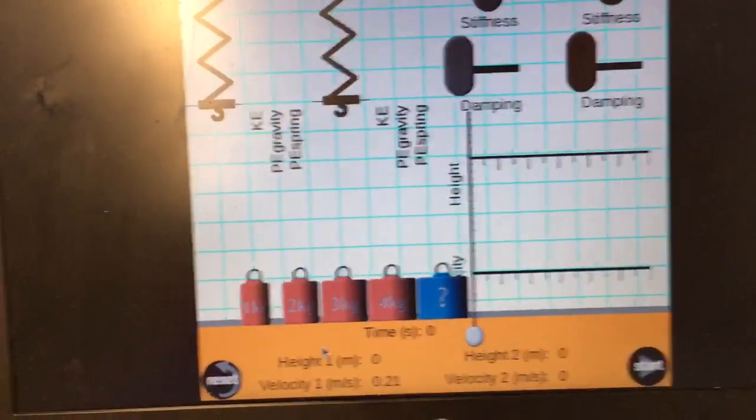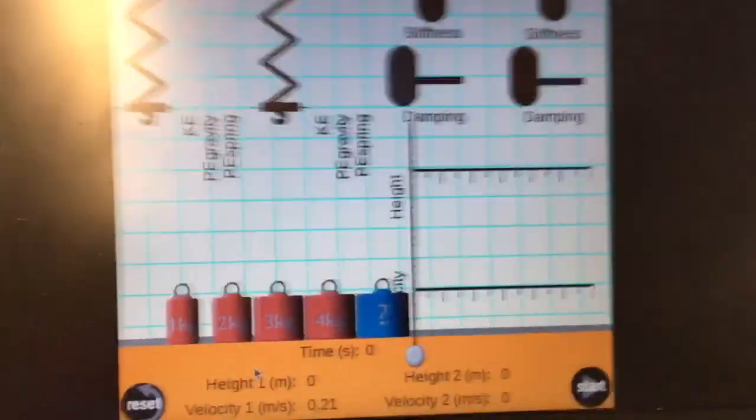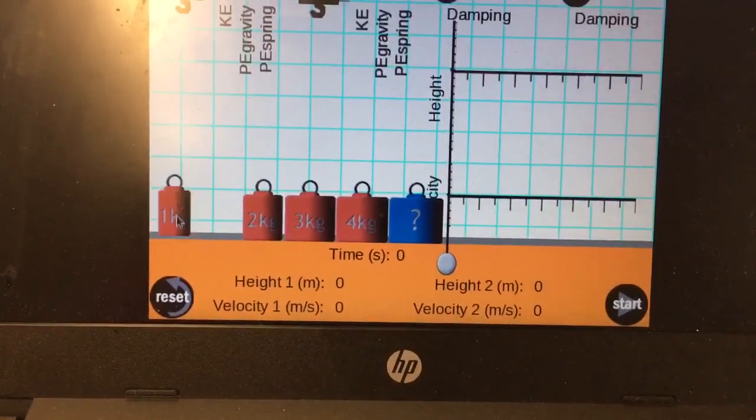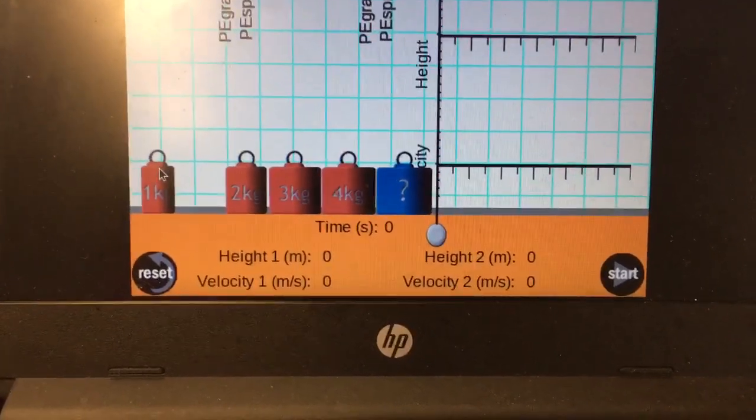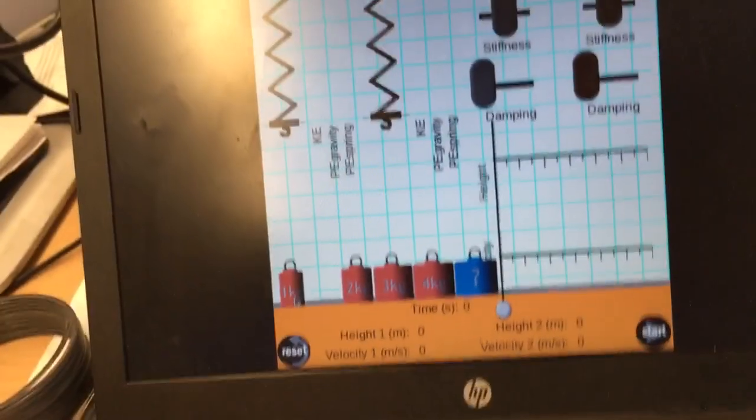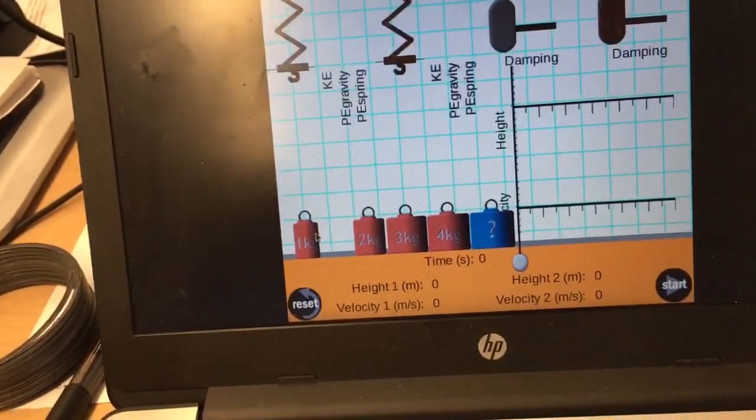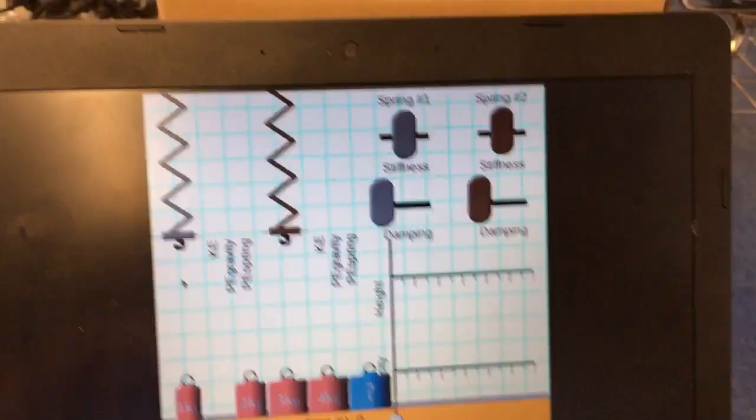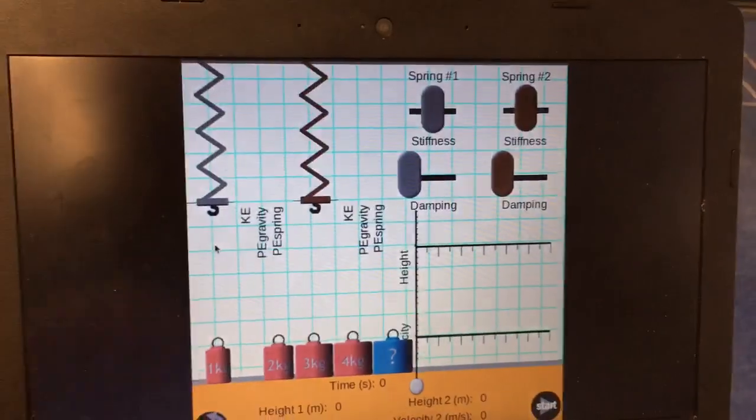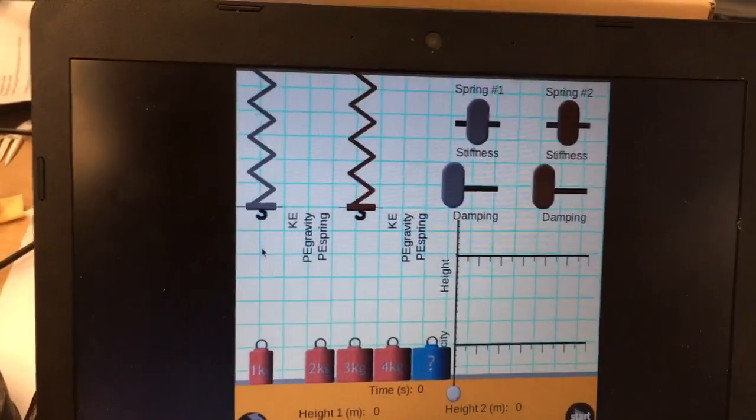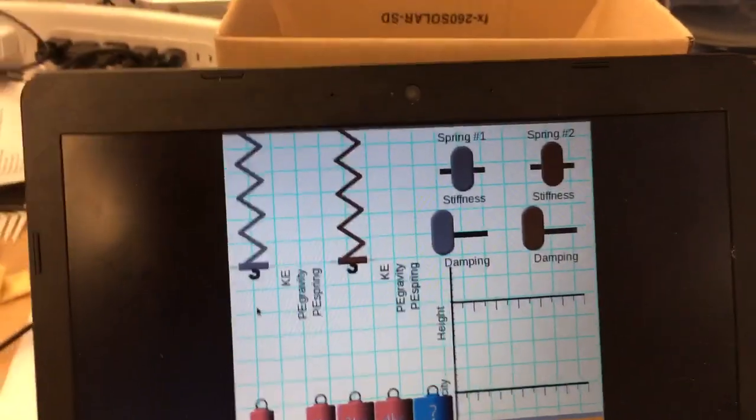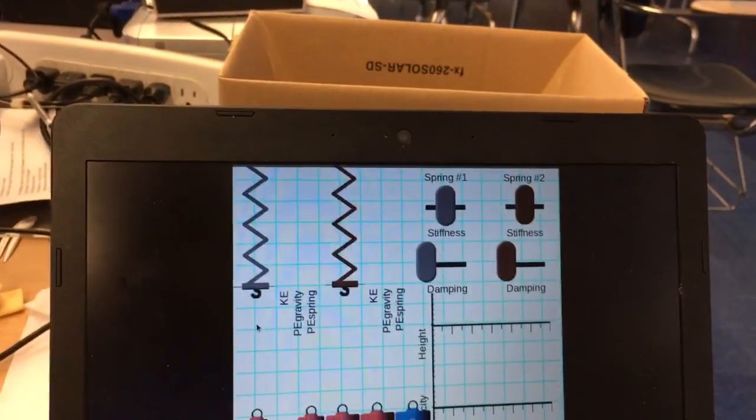instead of changing the mass, you could put a single mass on here. Maybe someday I'll get this. We'll just imagine there's a mass on there. There's other things I can change. I can change the stiffness and the damping, how stiff the spring is. And then I can also change whether there's any kind of resistance to motion, just like the damping in the wave settings that we did.